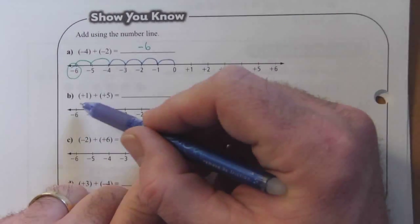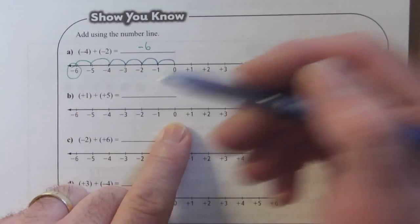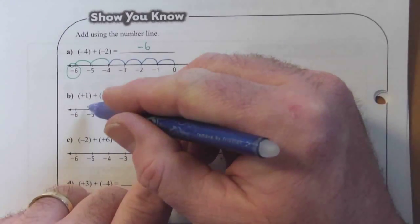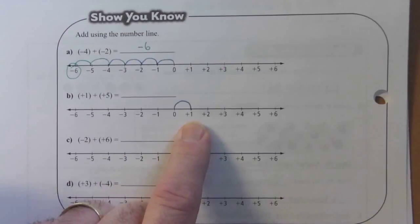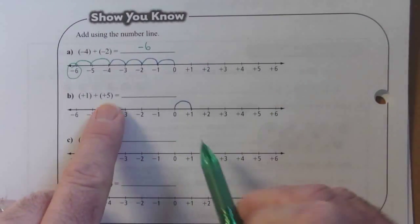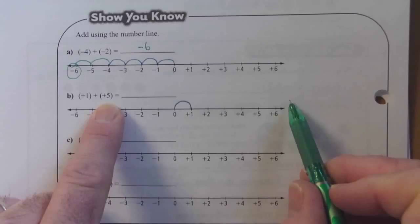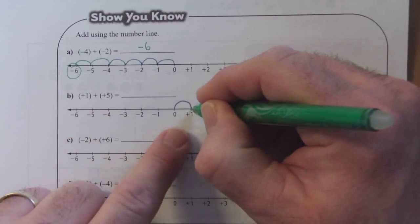Next one, start at zero. Positive, so I'm going to move to the right. One leap. Next number is also positive, so I'm going to continue moving to the right, and it's going to be five leaps.